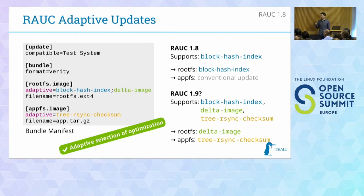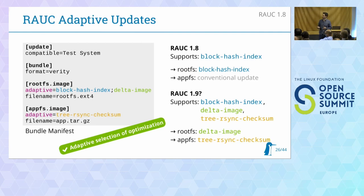In the bundle manifest, for each image you have a list under adaptive equals, which is a proposal of what update methods are supported. What is actually used depends on the RAUC service version. For example, RAUC 1.8 — not yet released — will support only the block hash index adaptive update. If the list includes block hash index as one option, it uses that as the optimization method. For images where no known adaptive mechanism is listed, it just uses a conventional update by copying the image. This keeps us fully backward compatible for whatever future adaptive update mechanism we add.